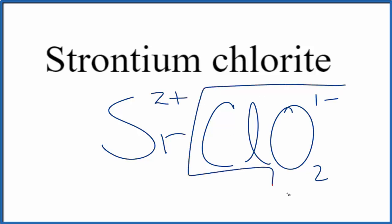So if we had 2 of these Chlorite ions, 2 times 1 minus, that's 2 minus, that would balance out the 2 plus, give us a net charge of zero.